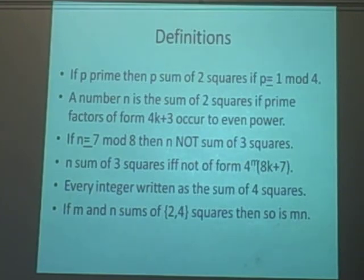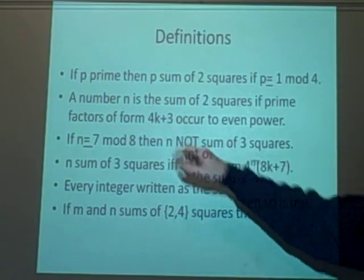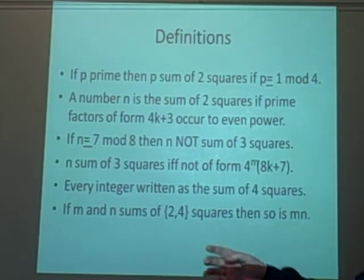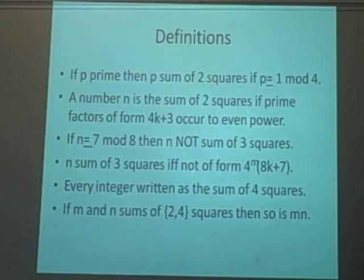A number, any number now not just a prime number, is the sum of two squares if any of the prime factors, if there are any prime factors of the form 4k+3, if they occur to an even power. If there aren't any prime numbers of the form 4k+3, then it will be expressed as the sum of two squares, because you can just imagine that is to the power zero, which we're using as even.